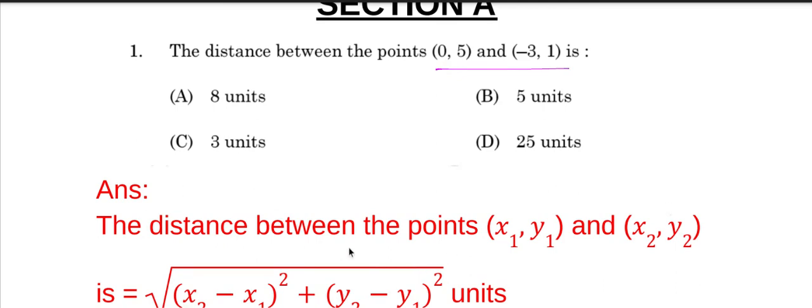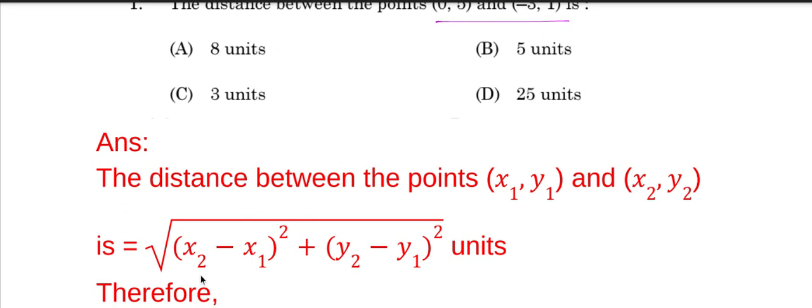We know that from the distance formula, the distance between the points (x₁, y₁) and (x₂, y₂) is equal to square root of (x₂ - x₁)² + (y₂ - y₁)² units.